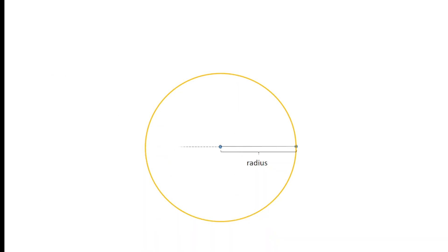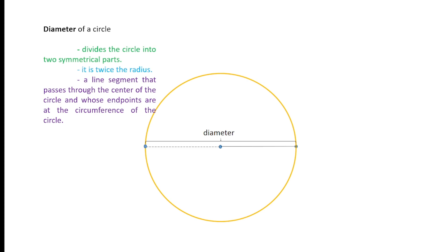Now if we extend the radius to the opposite end, we form a different line segment — there are actually two radii, and that is known as the diameter of the circle. Diameter divides the circle into two symmetrical parts, meaning the upper and lower portions are exactly the same. Diameter is also twice the radius, so in symbols: d = 2r.